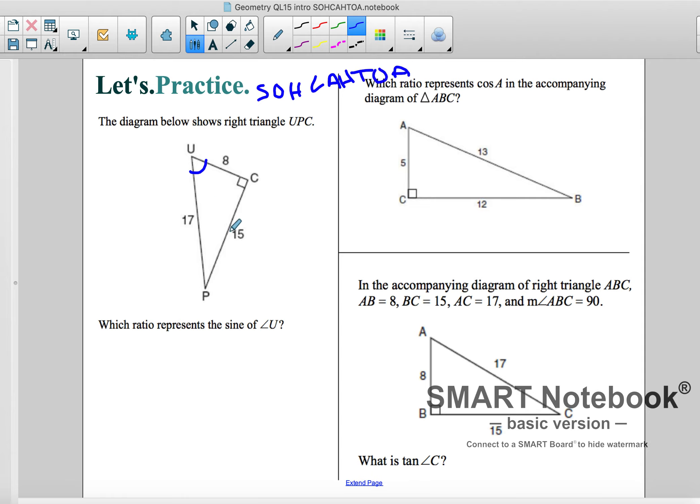And it says the sine of U. So that's my reference angle there. Well, it wants to know sine. So sine we know is opposite over hypotenuse. Sine is opposite over hypotenuse. Well, hypotenuse is easy to find. It's just opposite the right angle.